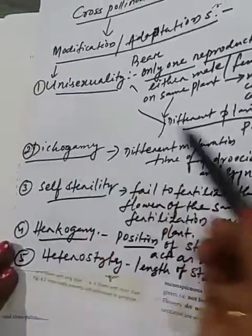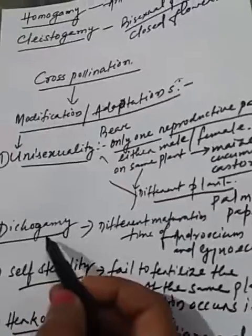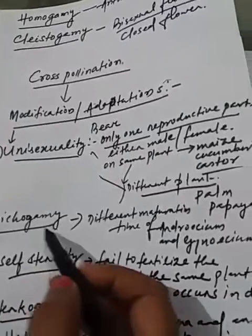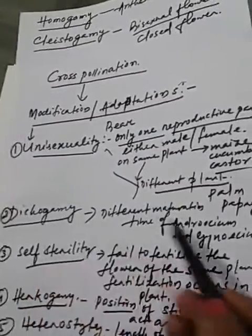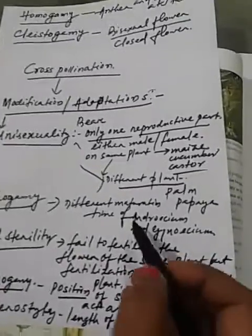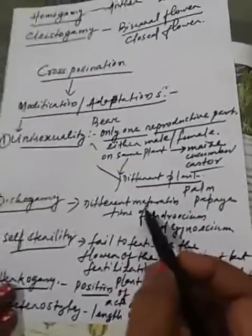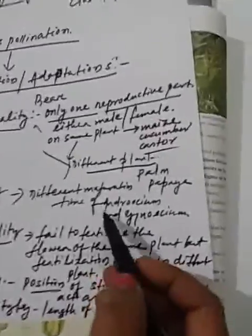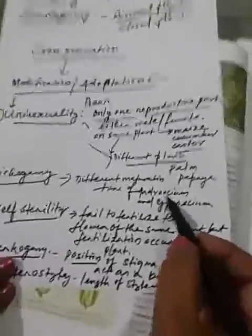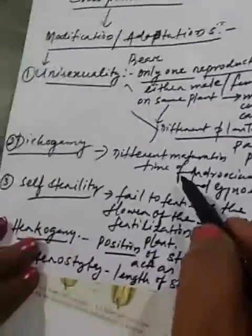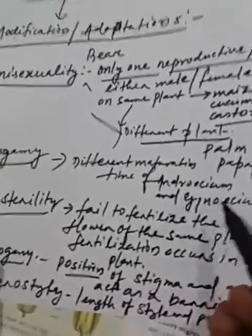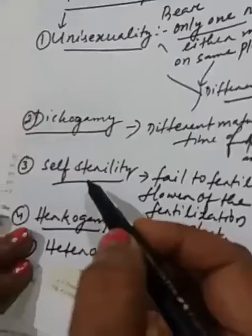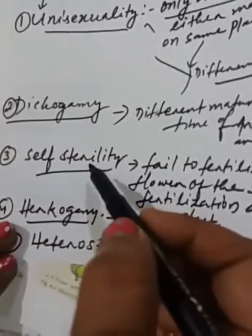The second is dichogamy, spelled D-I-C-H-O-G-A-M-Y. Dichogamy means different in maturity. The time period of maturation between the androecium and gynoecium is different.